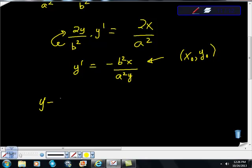so I have y minus y initial is equal to the derivative, negative b squared x over a squared y times x minus, and our x sub 1 value is x sub initial, is there,